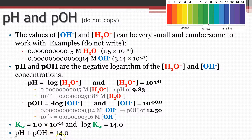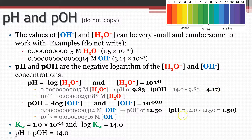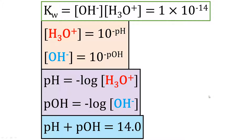Where I had a pH of 9.83, the pOH is 14 minus 9.83, giving 4.17. Where the pOH was 12.5, 14 minus 12.5 gives a pH of 1.5. Here's what you need to copy down: the ionization constant of water is [H₃O⁺][OH⁻] = 1 × 10⁻¹⁴. To find hydronium concentration: [H₃O⁺] = 10^(−pH). To find hydroxide concentration: [OH⁻] = 10^(−pOH). pH = −log[H₃O⁺], pOH = −log[OH⁻], and pH + pOH = 14.0. This is what you need to know, what we're going to be practicing and calculating.